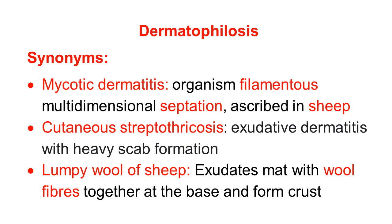The third name is Lumpy Wool of sheep. Here the exudation mats with wool fiber. The wool fibers clump together at the base and form a crust and large mass just like a lump of wool — so it is called lumpy wool disease.